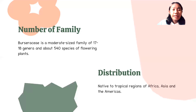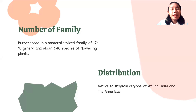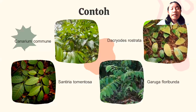Number of family: Burseraceae is a moderate-sized family of 70 to 80 genera and about 540 species of flowering plants. The distribution of Burseraceae is native to tropical regions of Africa, Asia, and the Americas. Examples of this family are Canarium commune, Dacryodes rostrata, Santiria tomentosa, and Garuga floribunda.